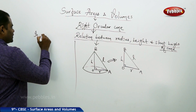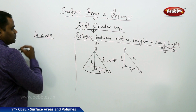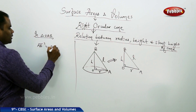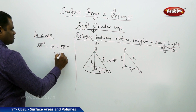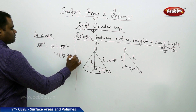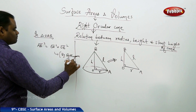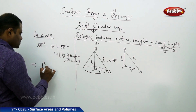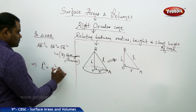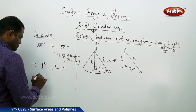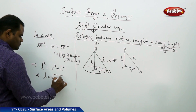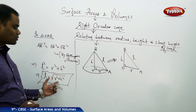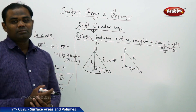Since OAB is a right-angle triangle, we can apply the Pythagorean theorem. In right-angle triangle OAB, AB² equals OA² plus OB², by Pythagoras theorem. This gives us L² = R² + H², which means L equals the square root of R² + H². That is the relation between L, R, and H for a cone.